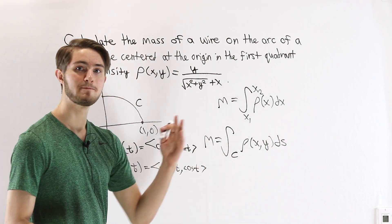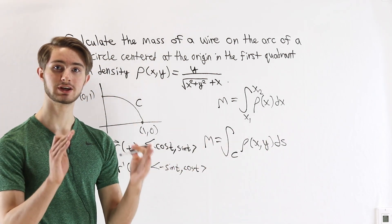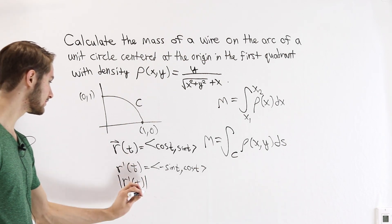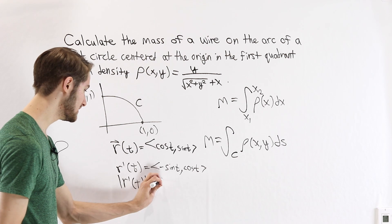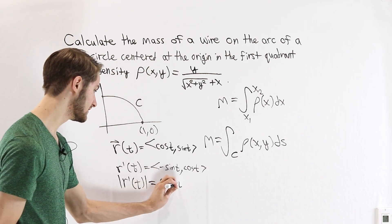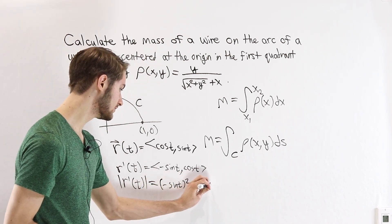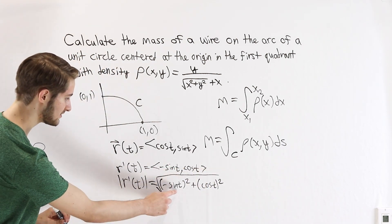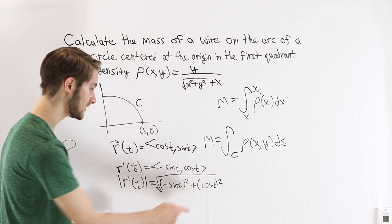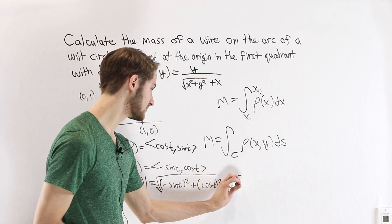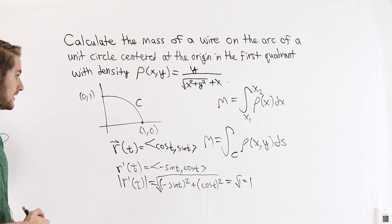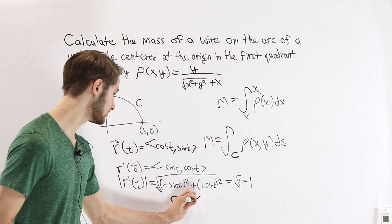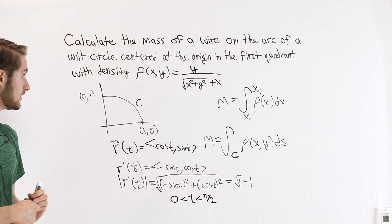And to find ds, we need the magnitude of that change so that we can look at the length, which corresponds to the magnitude of this derivative. The magnitude of r'(t), that's going to be negative sine t squared plus cosine t squared. And then we take this square root. Inside here, we have sin² t + cos² t. So this is the square root of 1, which is just 1. And finally, since we're in the first quadrant, we want t to be between 0 and π/2.